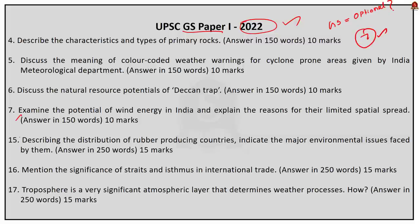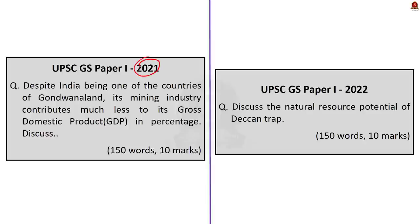Specifically, questions 4, 5, 6, 7, 15, 16 and 17 were from geography. All 7 questions focused on basic core geography, which aspirants tend to ignore while preparing their GS paper. So this is UPSC signaling aspirants to go back to the basics. Let us take two questions — one from the 2021 paper and one from the 2022 paper — and compare both.